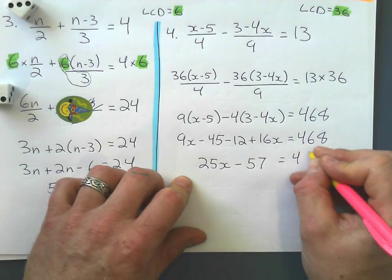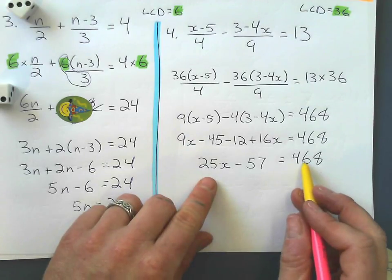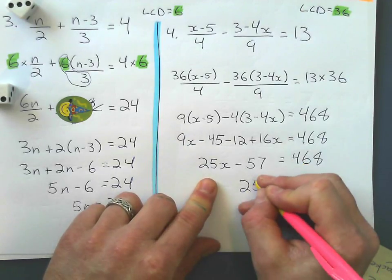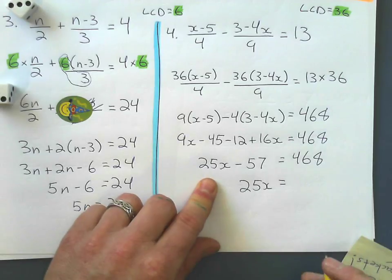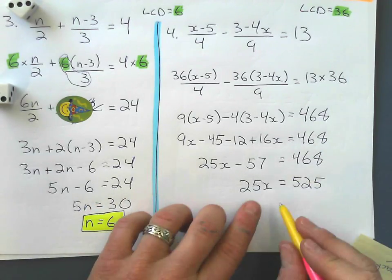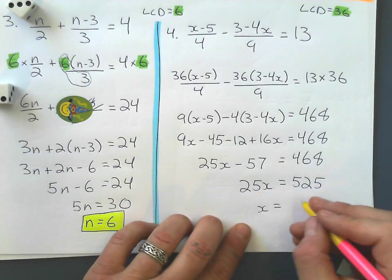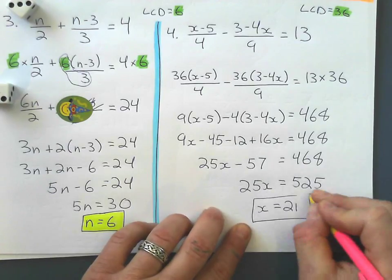Minus 57 equals 468. Now, I'm getting there. At least the fractions are gone. Add 57 to the other side, and I get 25x equals 525. Finally, divide by 25 to solve. 525 divided by 25 is 21.